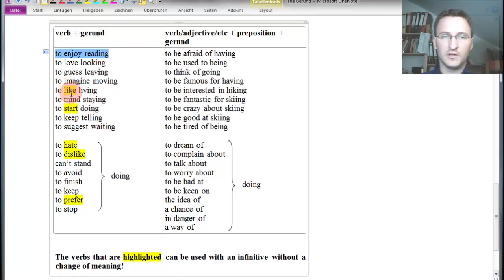These verbs all have got a gerund following. Note that the yellow words here, those words highlighted, they can also be followed by a zu-infinitive. And here on the right side, we've got a combination of verb, adjective or noun plus preposition that are then followed by a gerund. So what you have to do now is study this list and whenever you find the word 'enjoy' in a text, for example, you know that the gerund has to follow.